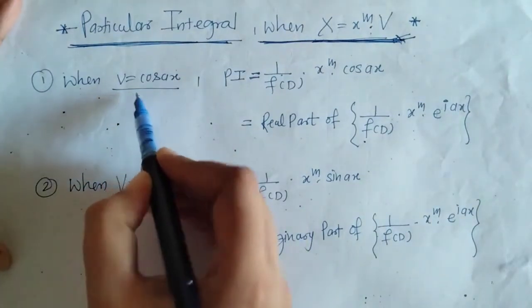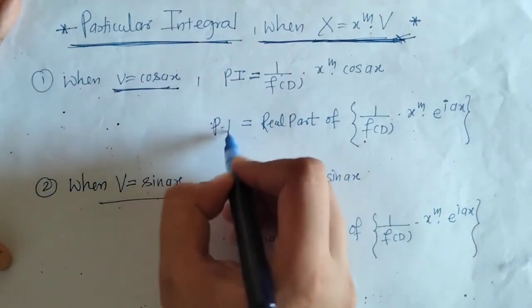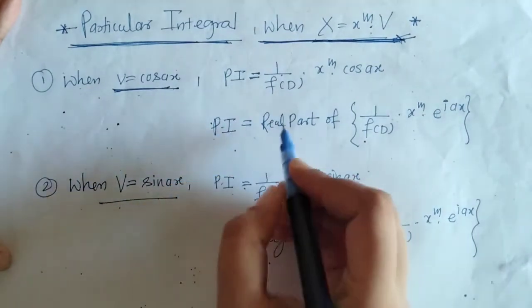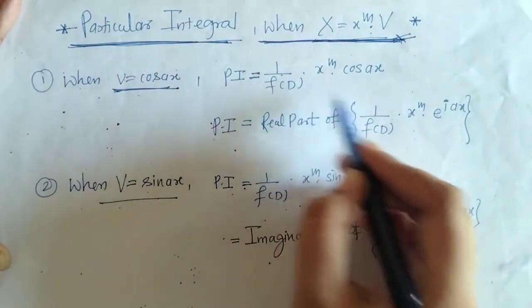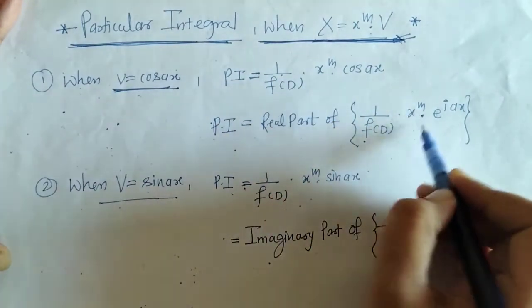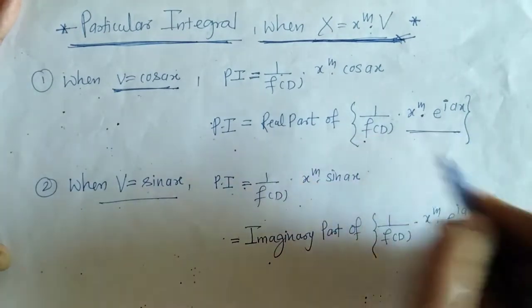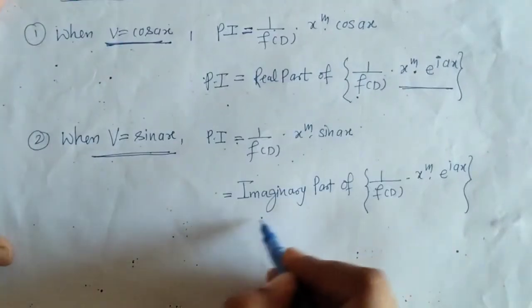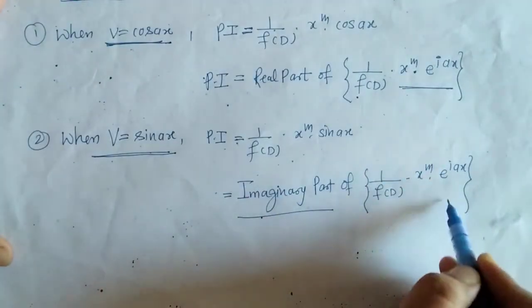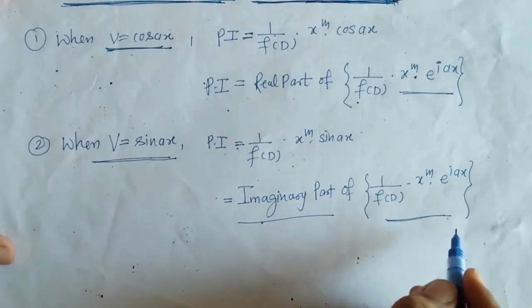We know that when v equals cos(ax), PI equals the real part of 1 upon f(d) into x raised to m times e raised to iax. And when v equals sin(ax), we take the imaginary part of this operation. Now let us proceed with the example.